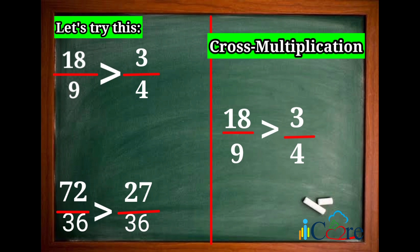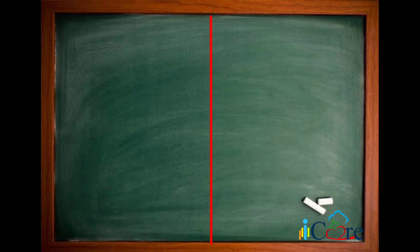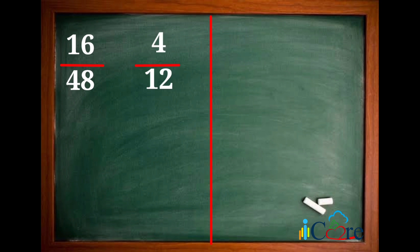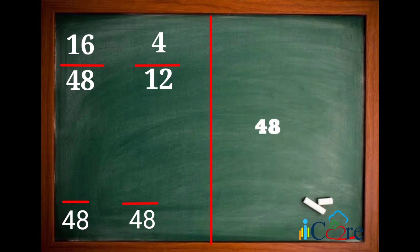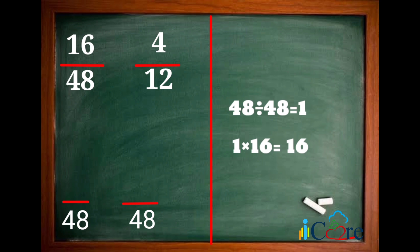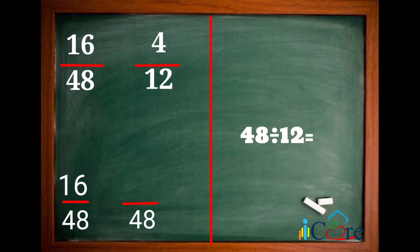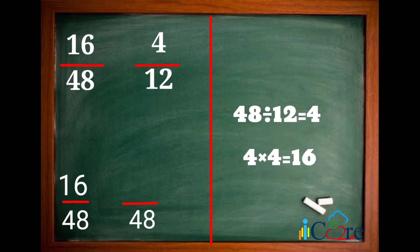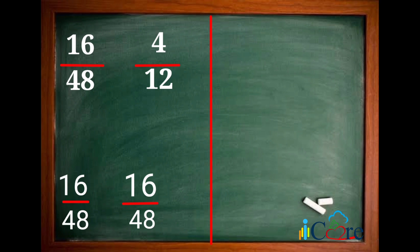By using two different methods, the answer is still the same. Let's have one last example: 16 over 48 and 4 over 12. Using the first method, we need to find the LCD. The LCD of 48 and 12 is 48. 48 divided by 48 is equal to 1. 1 times 16 is 16. Then, 48 divided by 12 is equal to 4. 4 times 4 is equal to 16. The converted fractions are 16 over 48 and 16 over 48.